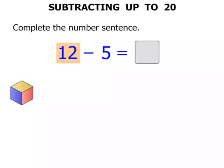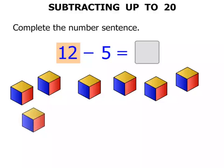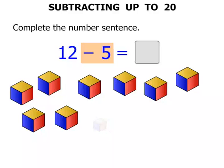12 to start with. 1, 2, 3, 4, 5, 6, 7, 8, 9, 10, 11, 12. We've got 12 blocks there. Now we're taking away 5, subtracting 5. Let's get rid of 5. 1, 2, 3, 4, 5.